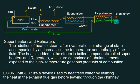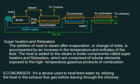Air is coming from the atmosphere and is slightly heated in the air preheater. From the other side, flue gases from the chimney are passing. Because of this, the temperature of air is slightly raised, and that hot air is supplied to the boiler. If the air is hot, naturally less heat is required to raise its temperature, so our heating is more effective.